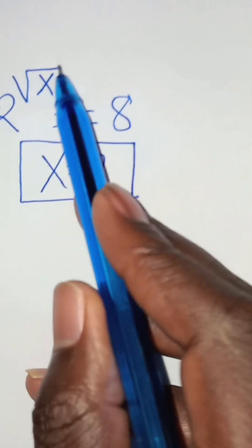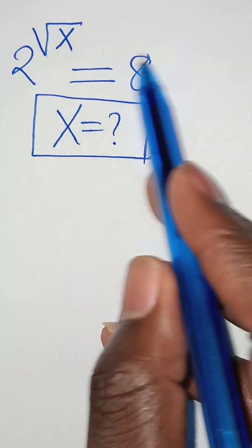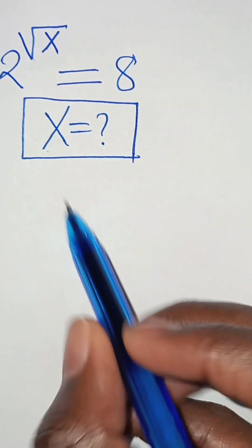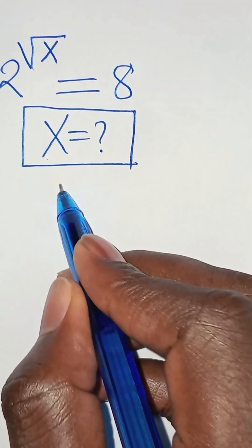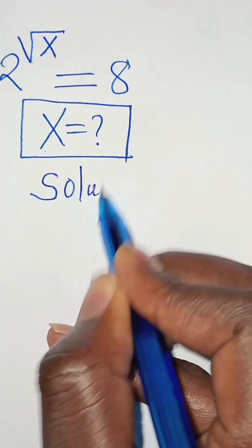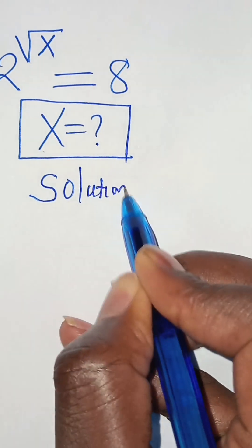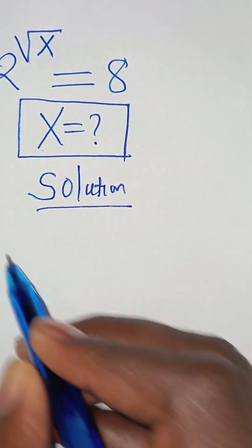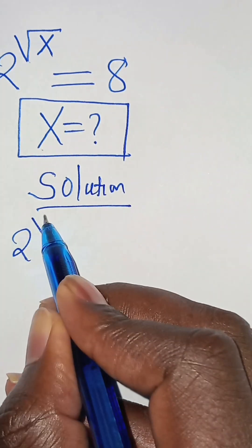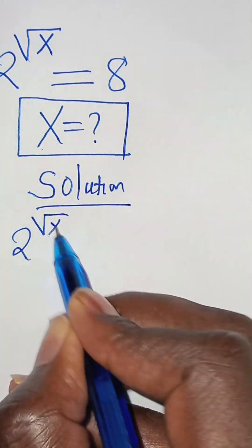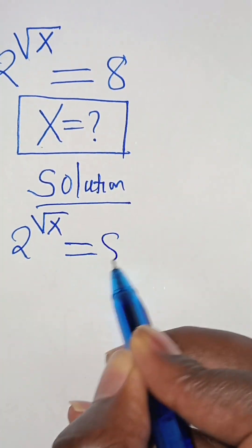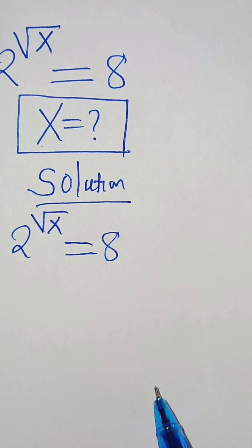2 raised to the power of square root of x, this is equal to 8. So what is the value of x? Solution: 2 to the power of square root of x, this is equal to 8.